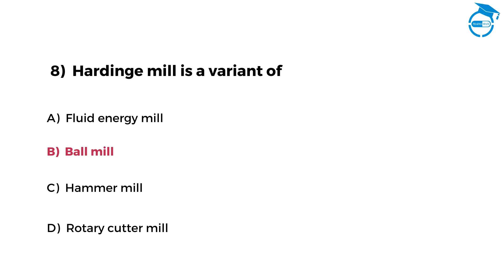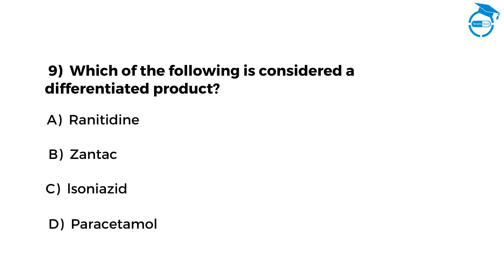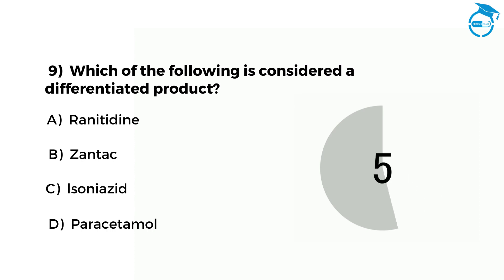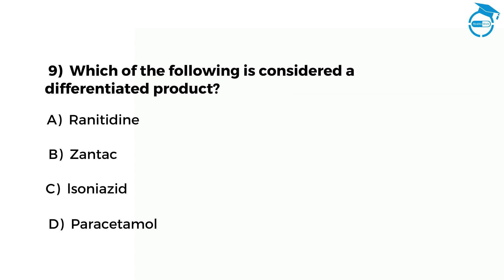Here is the next one. Which of the following is considered a differentiated product? Option A: ranitidine. Option B: Zantac. Option C: isoniazid. Option D: paracetamol. Your time starts now. Post your answer in comments. The right option is B, that is Zantac.